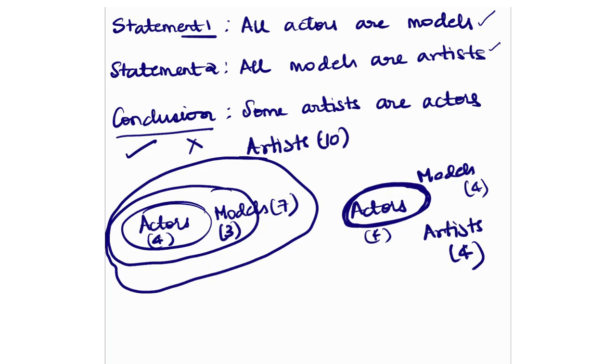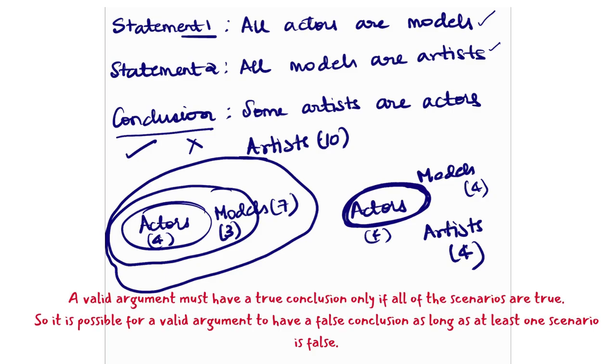So this is statement number one, statement number two. Now they have asked you for a conclusion saying some artists are actors. Is this correct? Or is this wrong? Now, when you have to look at this question, what you have to see is you have to apply it to both the cases. And only if it is correct in both the cases, you have to say it is right or wrong.